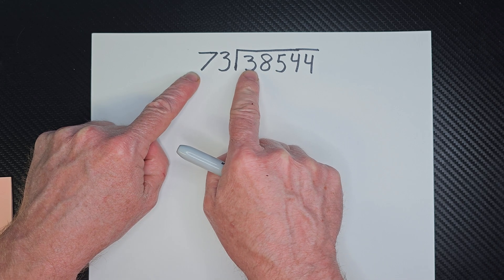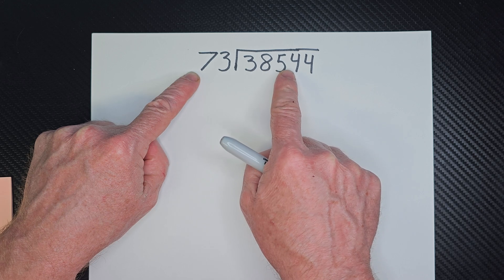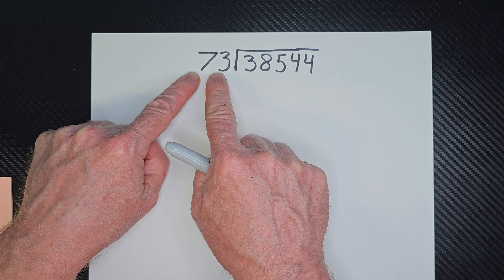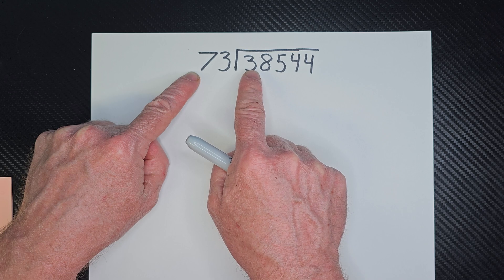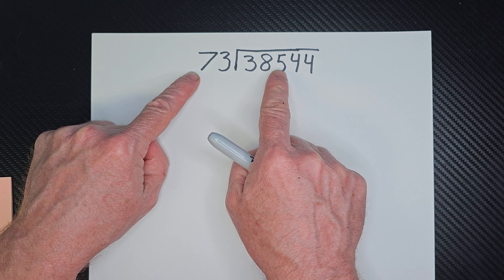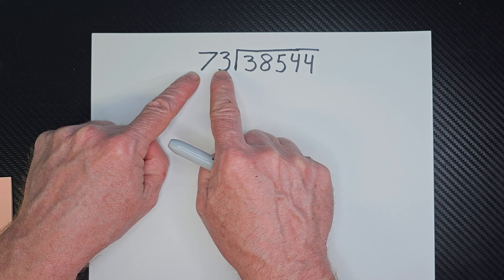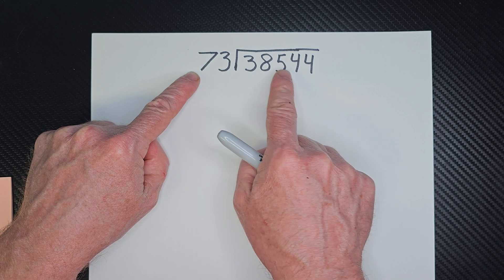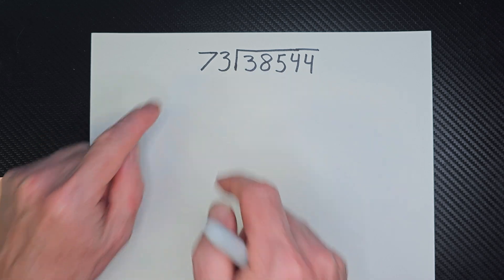Let me see how many times I can put 73 into 385. Maybe 7 times 4 would be 280. 70 times 5 would be 350. 70 times 6 would be 420. Let's go with 5.